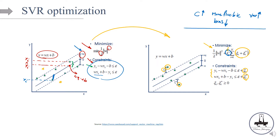If we decrease C — the cost of having observations outside the margin — then we can have more observations outside the margin. The model becomes less flexible: the bias is going to increase and the variance is going to decrease. So we tune this hyperparameter to come up with a better regressor at the end of the day.